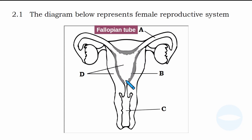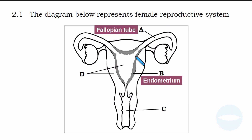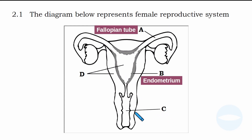Part B is this wall inside the uterus. The name of this wall is called the endometrium. Every month this wall is shed and then a new one is formed — the thickness is shed and a new one is formed. During the menstrual cycle, this wall is shed and a new one is formed every month.